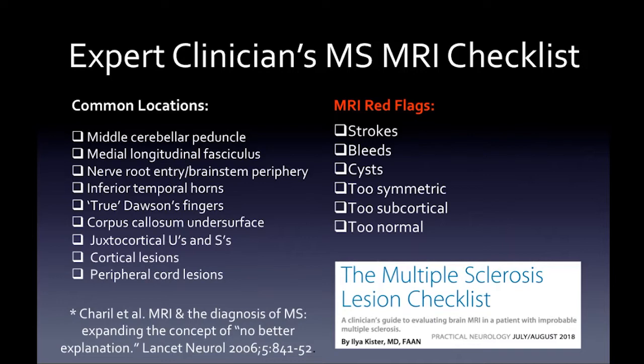Things to watch out for on MRI: strokes, bleeds, cysts. If your white matter lesions are too symmetric, too subcortical, or too normal-looking, those are red flags. You want your checklist boxes to be more on the 'MS-supportive' side of the slide.